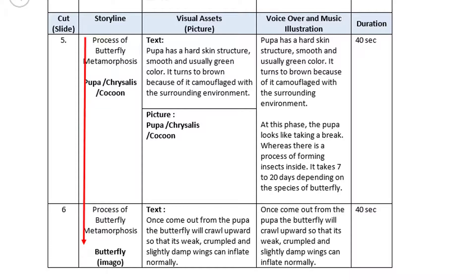For the fourth step, which is the larva or caterpillar stage, you can do the same — explain the larva's process coming from the egg to larva, show the picture, and provide the explanation during the larva process. And so on and so forth until the last phase of butterfly metamorphosis, which is imago or butterfly.